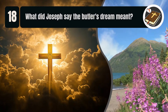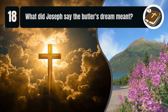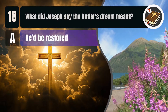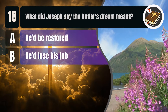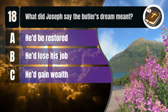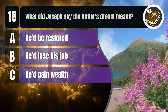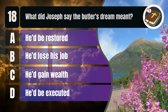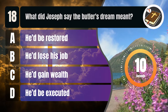Question 18. What did Joseph say the butler's dream meant? A. He'd be restored. B. He'd lose his job. C. He'd gain wealth. D. He'd be executed.